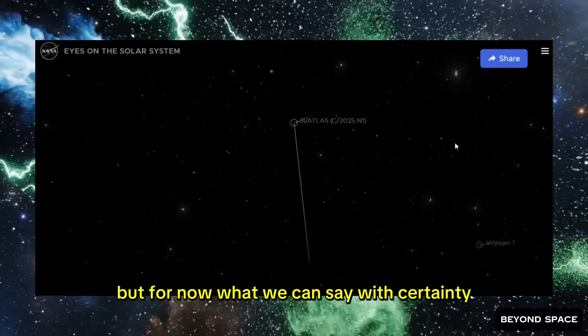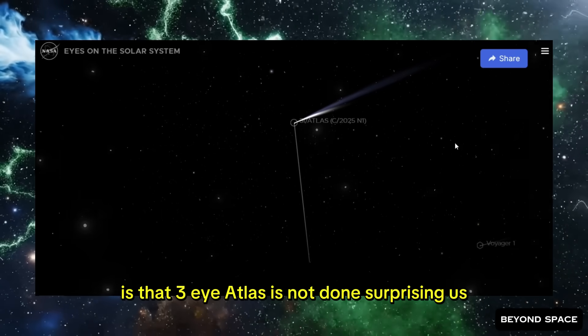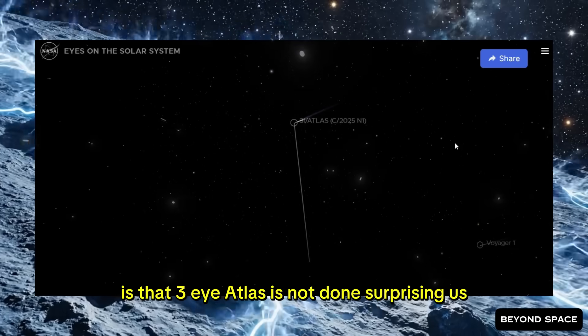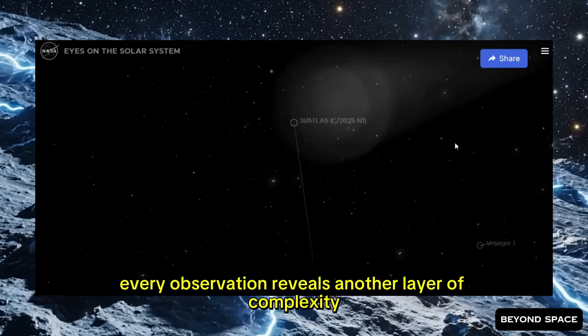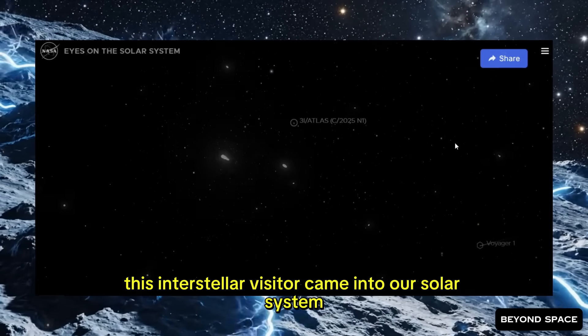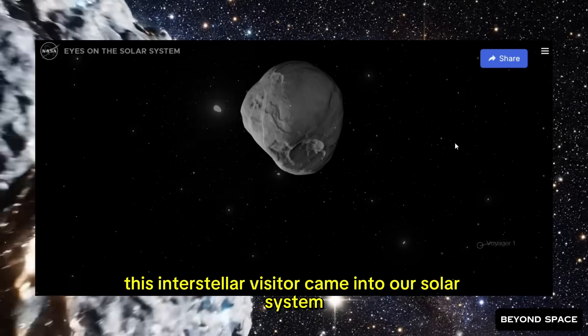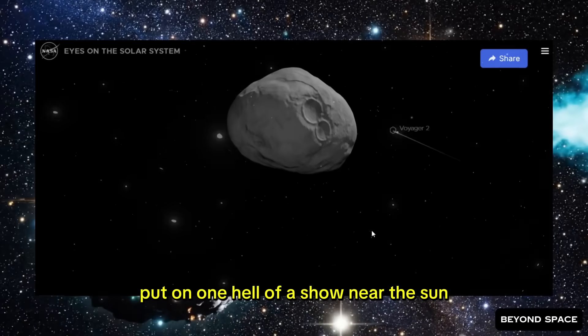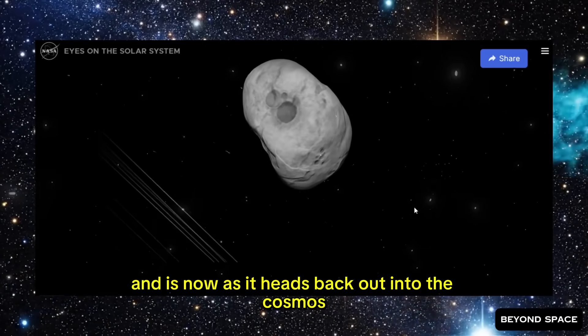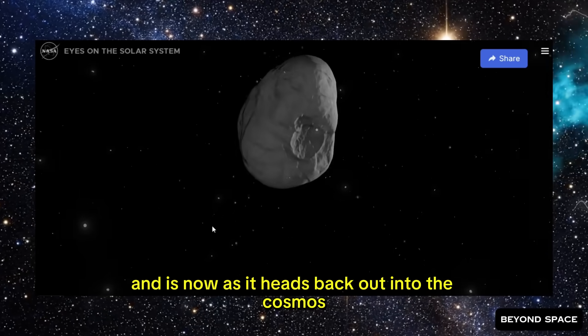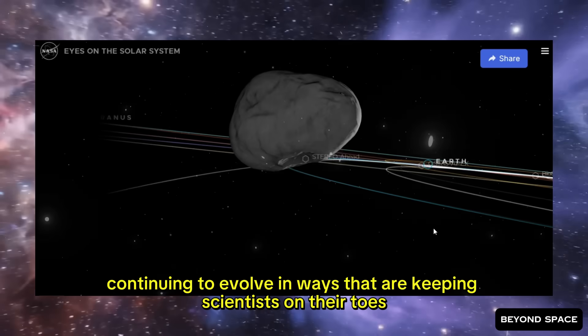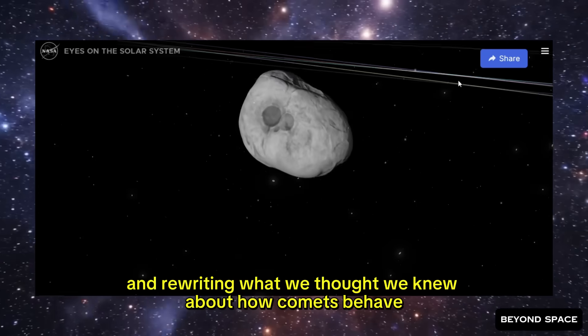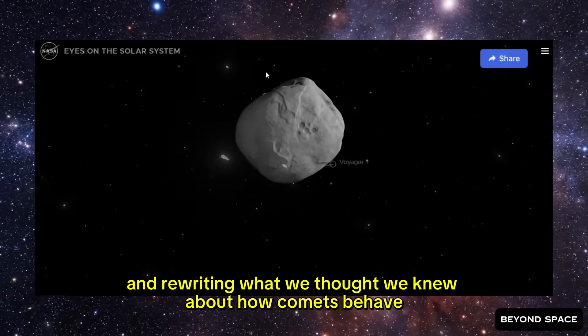But for now, what we can say with certainty is that 3i Atlas is not done surprising us. Every update brings something new. Every observation reveals another layer of complexity. This interstellar visitor came into our solar system, put on one hell of a show near the sun, and is now, as it heads back out into the cosmos, continuing to evolve in ways that are keeping scientists on their toes, and rewriting what we thought we knew about how comets behave.